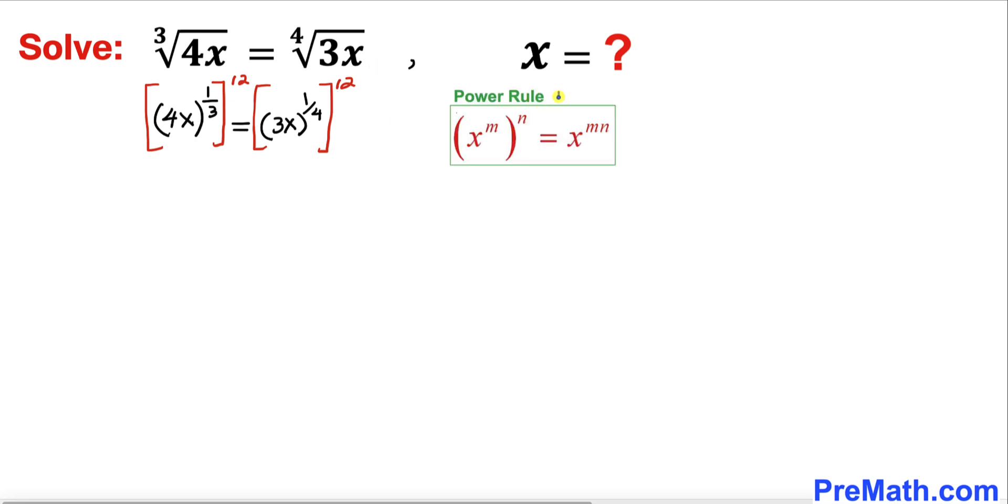And now let's recall the power rule of exponent. According to this rule we are going to multiply one third times 12, and likewise one fourth times 12 as well.